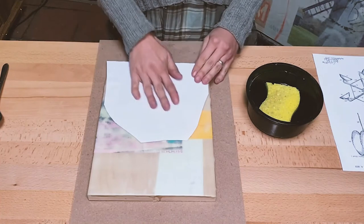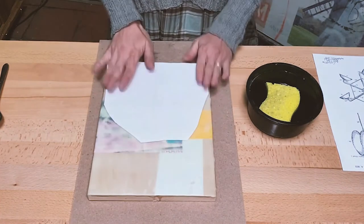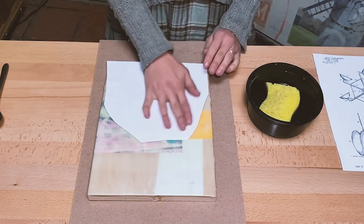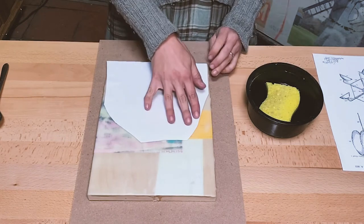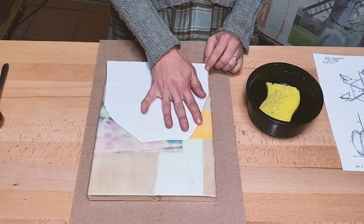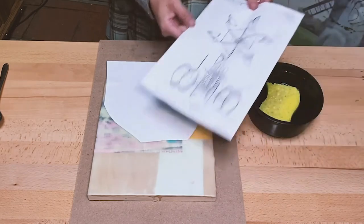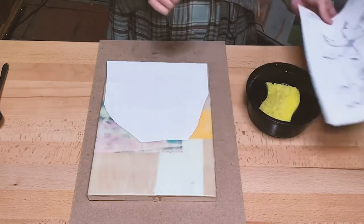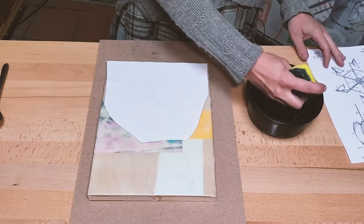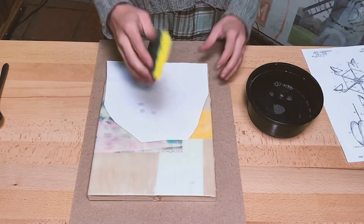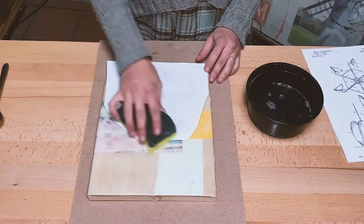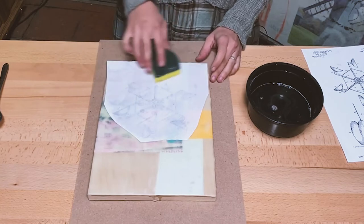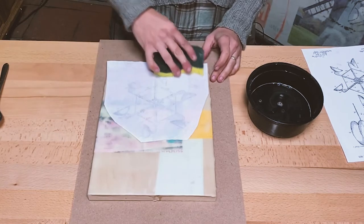Alright, so now that our encaustic painting has cooled, it's time to take our sponge and water and get rid of this paper so that all we see is the toner image and the clear encaustic where the white of the paper used to be. And your sponge doesn't have to be super drippy, but you do want to saturate the back of your paper. Gently.